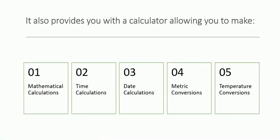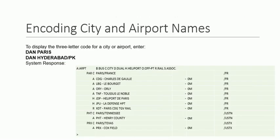Further, Amadeus also allows you to use a calculator for making mathematical calculations, time calculations, date calculations, metric conversions, and temperature conversions. In this course we will first be talking about the encoding of city and airport names, and in further lectures we will cover decoding and encoding of airport names, following all of these topics one by one.